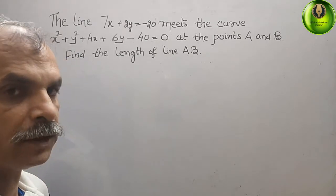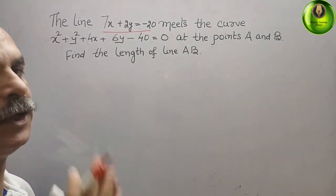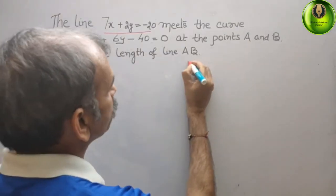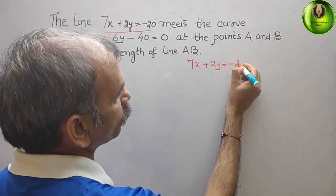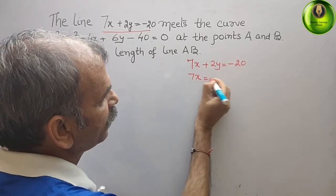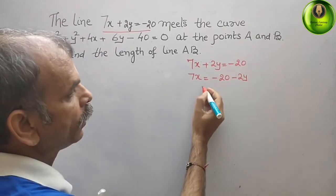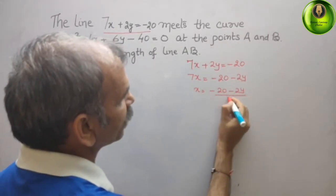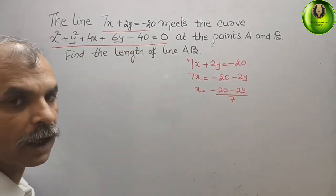So first, what we have to do? From this line equation, we will find out some value of x or y — anything you can take. They have given us 7x plus 2y equals minus 20. So 7x equals minus 20 minus 2y, and x equals minus 20 minus 2y, all divided by 7. Now we will substitute this value into the curve equation.